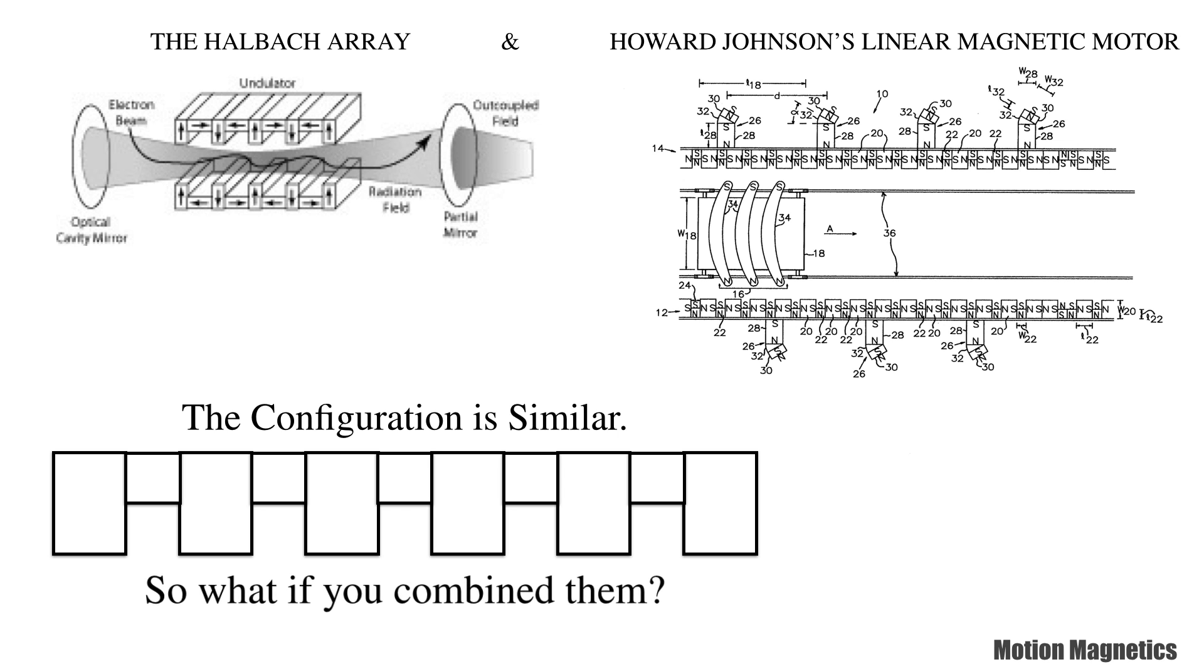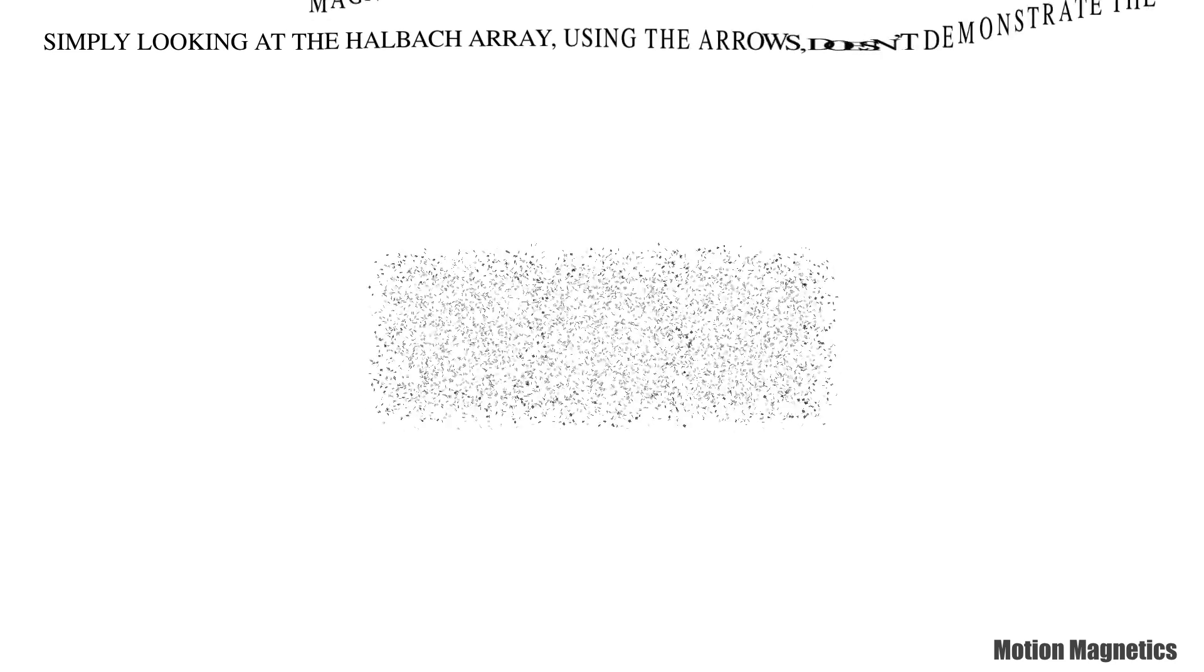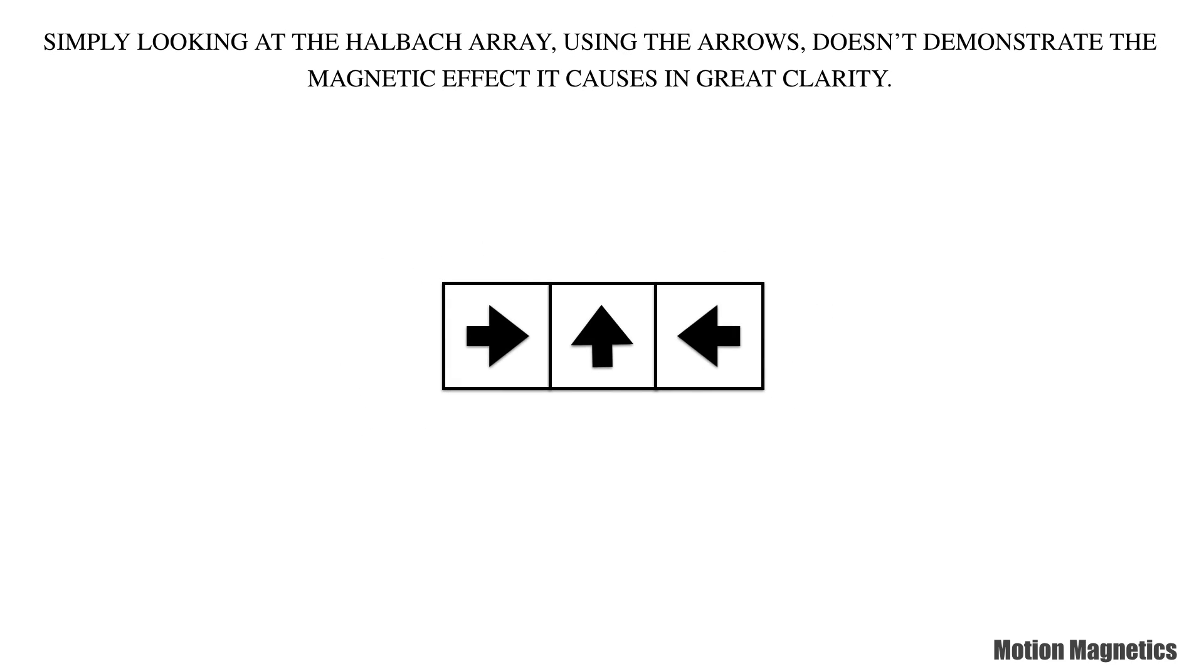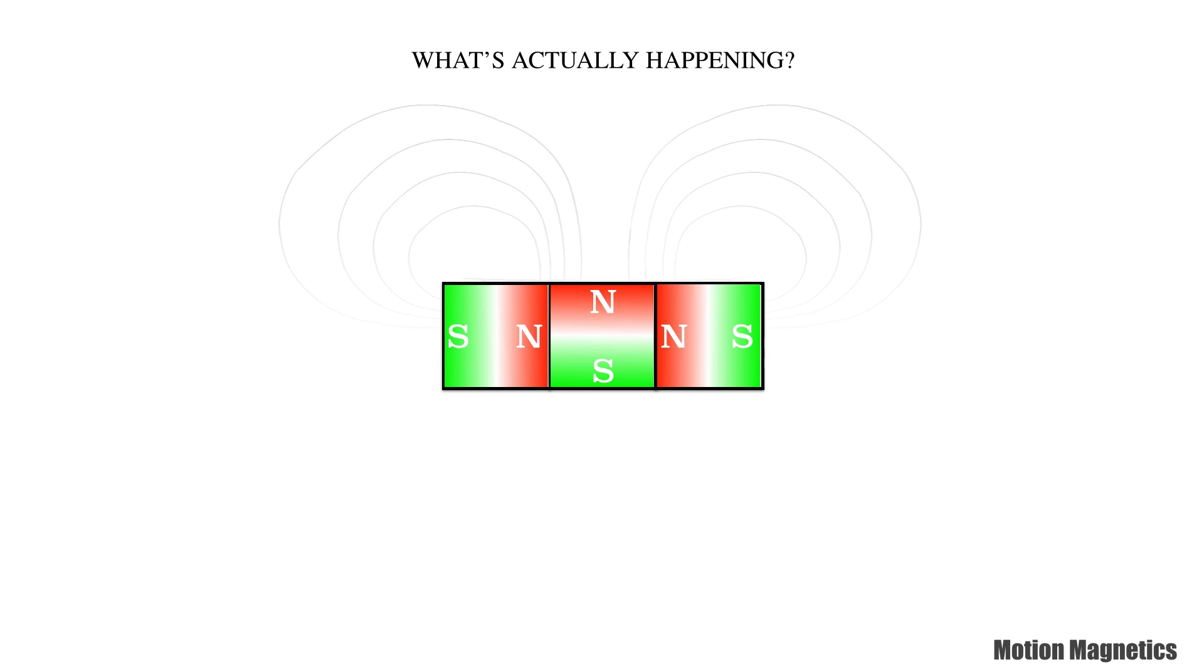Simply looking at the Halbach Array using the arrows doesn't demonstrate the magnetic effect it causes in great clarity. What's actually happening? By forcing the north poles together, it amplifies the magnetic field pattern.